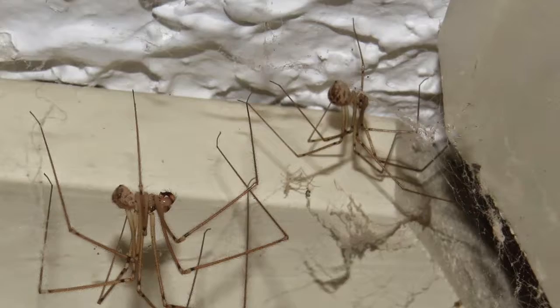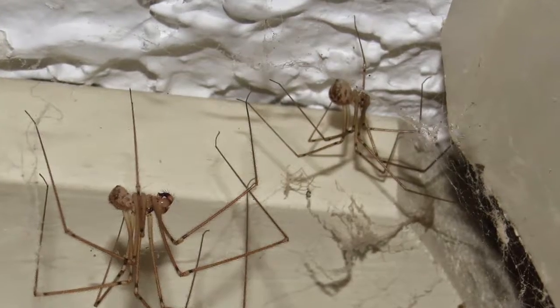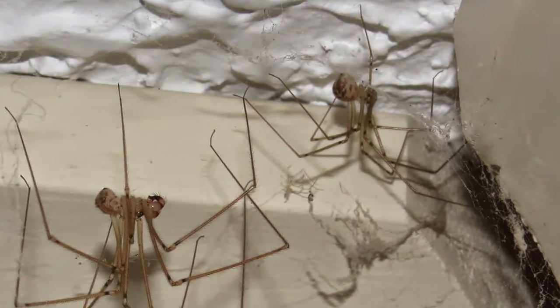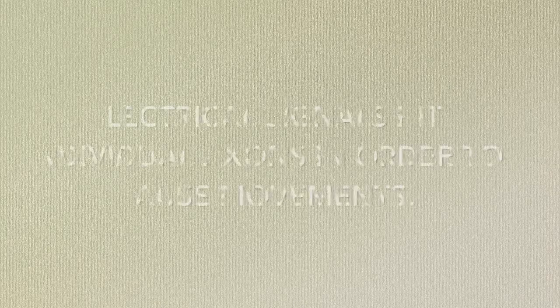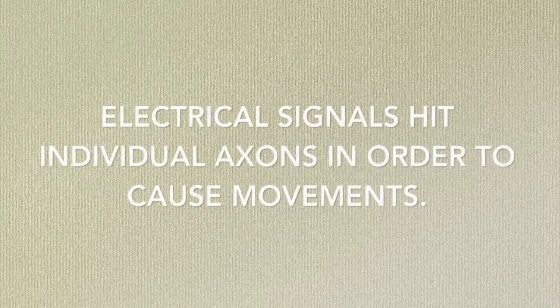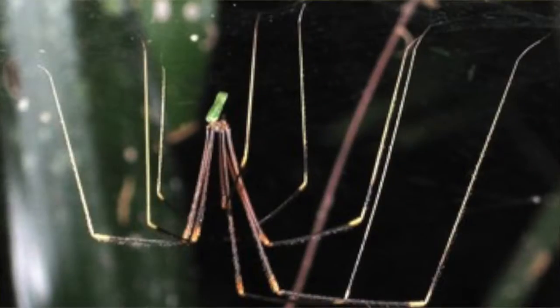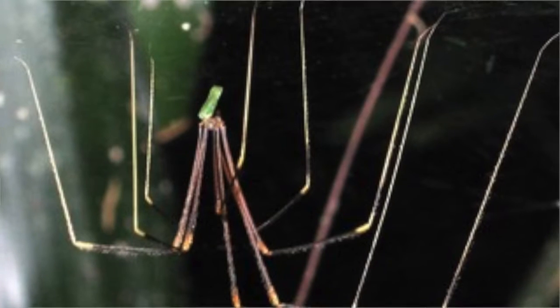Not much is known when it comes to the causation of the gyrating motions made by cellar spiders. I hypothesize that nerve impulses aid these spiders in creating the vibrations. I believe this is the cause because in order to move in fast circular motions, you also have to make use of the body and move individual body parts. This requires electrical signals to hit distinct axons along the body.